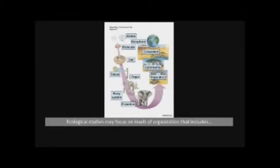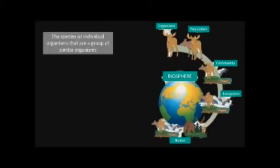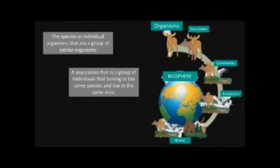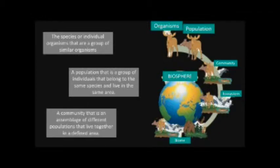Ecological studies may focus on levels of organization that include the species, or individual organisms that are a group of similar organisms; a population, that is a group of individuals that belong to the same species and live in the same area; and a community, that is an assemblage of different populations that lives together in a defined area.